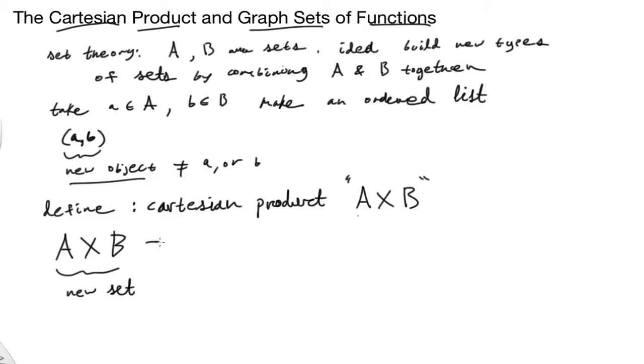And A cross B is, it's a new set. It's a new set, and it's equal to, here's our bracket notation, all the ordered pairs subject to the condition, and the condition is fairly straightforward, that it's all the combinations of pairs of A coming from the set A and little B coming from the set big B.